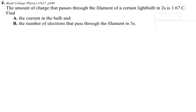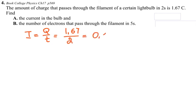Here are a few problems. Find the amount of charge that passes through the filament of a light bulb in two seconds. Using current equals charge per time, we get 1.67 divided by 2 seconds, giving a current of approximately 0.835 amperes, or 835 milliamps.